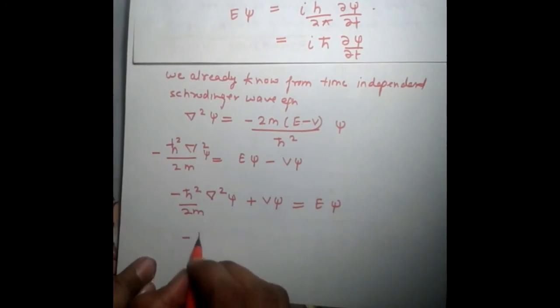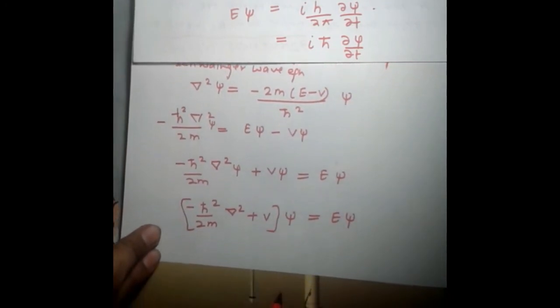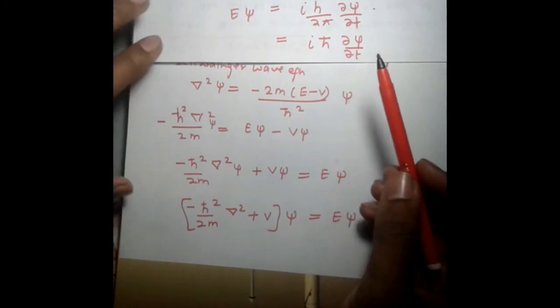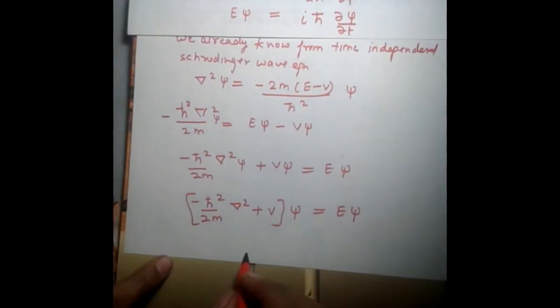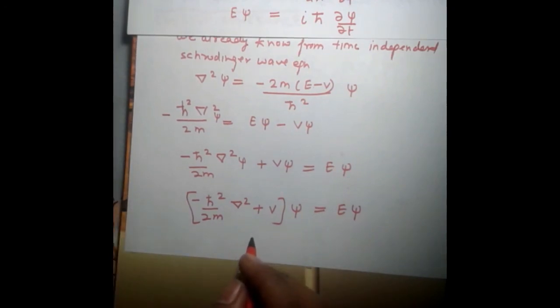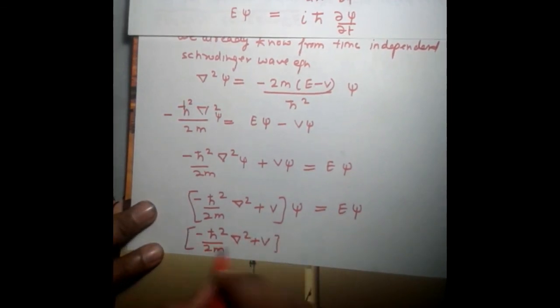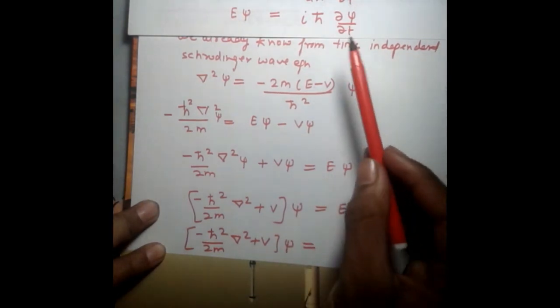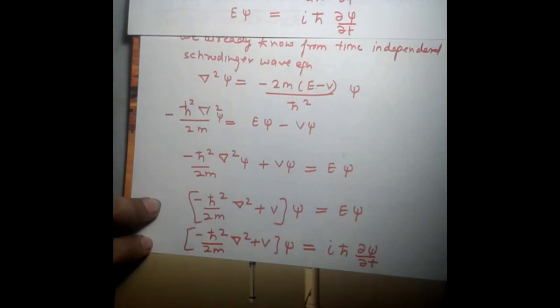Taking ψ common over here, [-ℏ²/(2m)∇² + V]ψ equals Eψ. Since we know the value of Eψ, putting this value over here, [-ℏ²/(2m)∇² + V]ψ equals Eψ equals iℏ ∂ψ/∂t. This is time dependent Schrödinger equation.